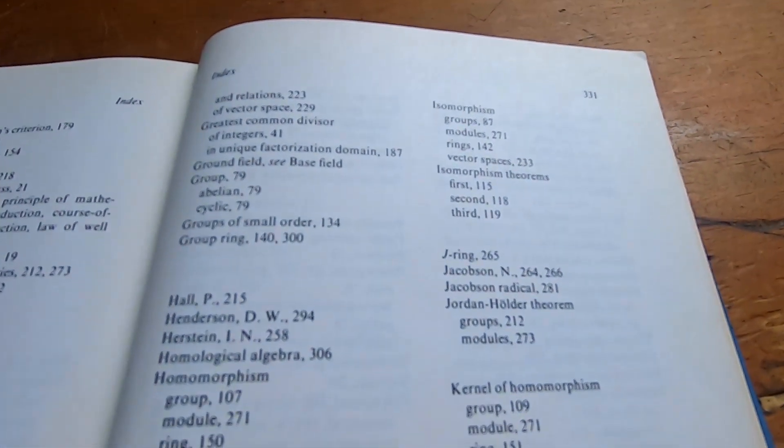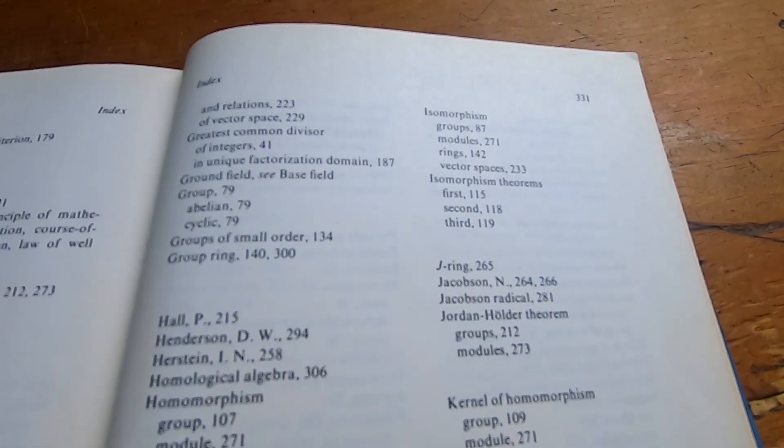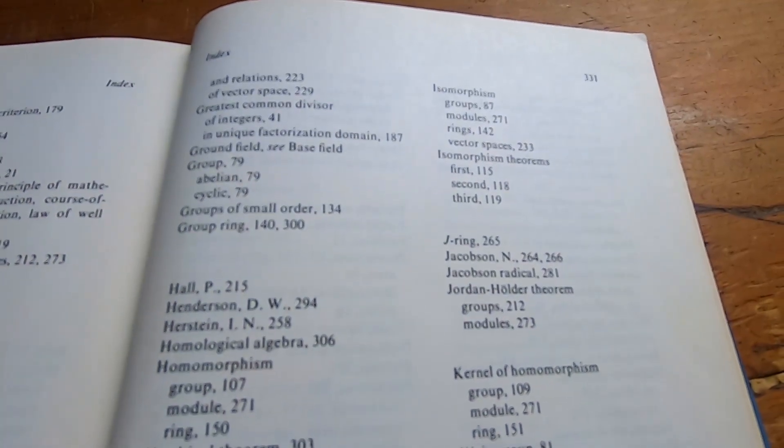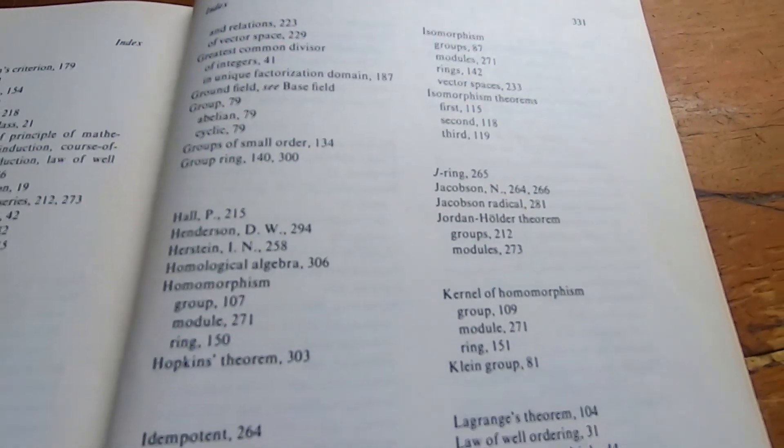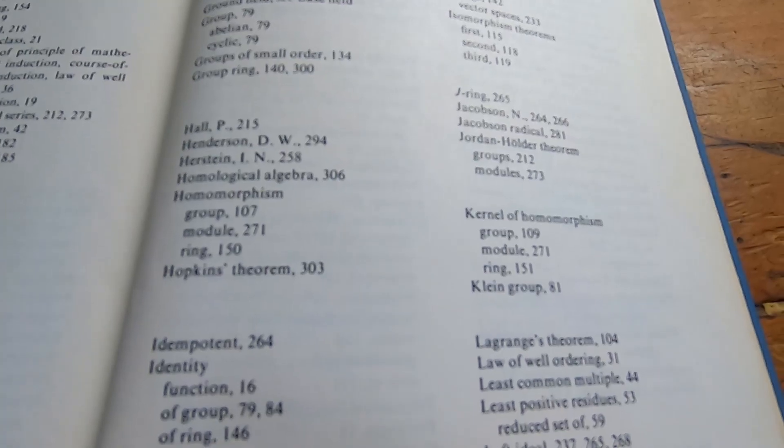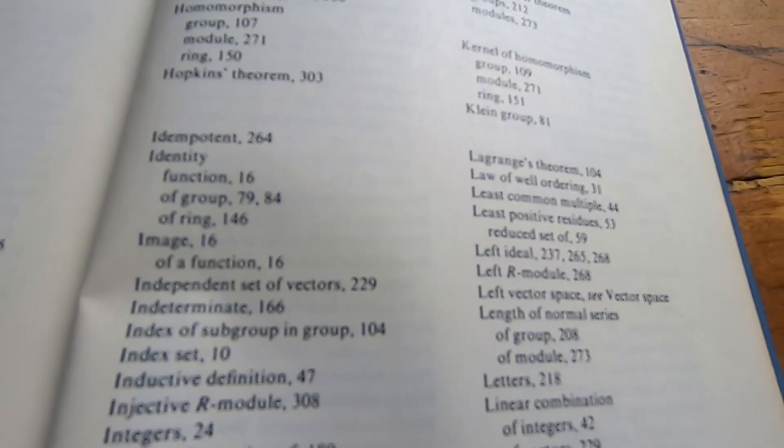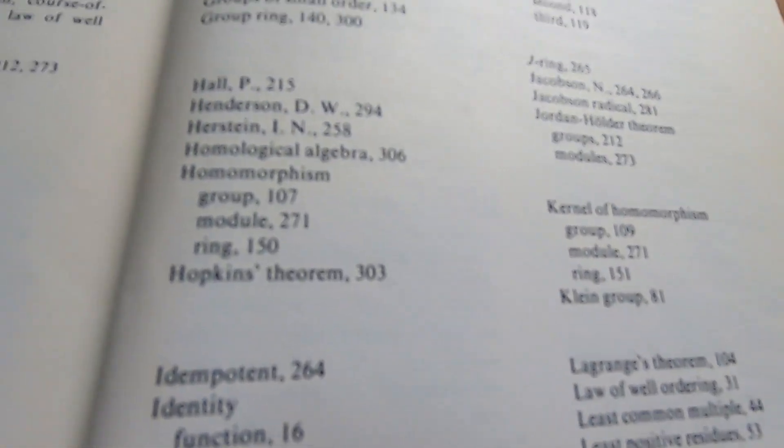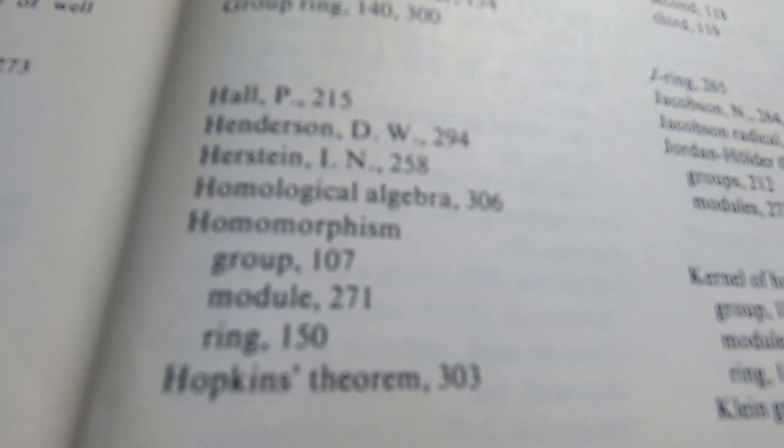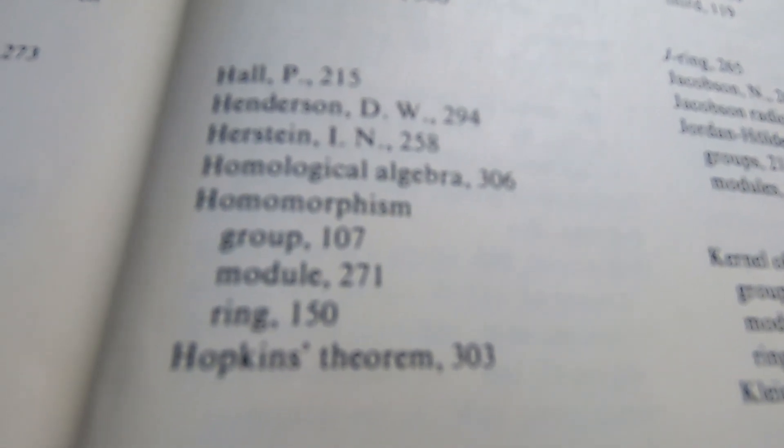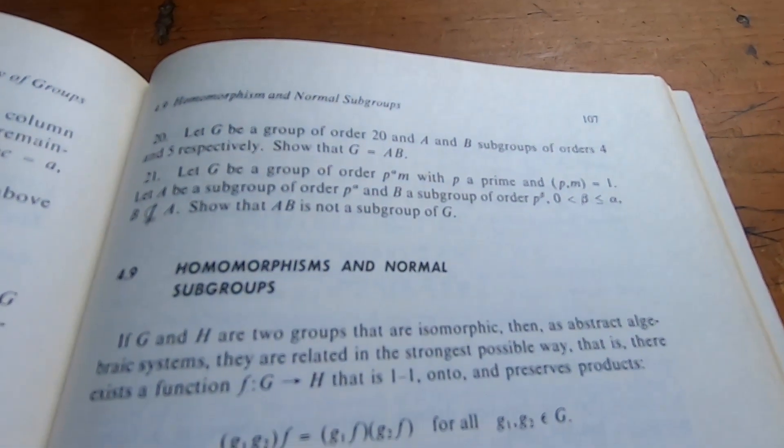The index in the book is also quite useful. So, let's say you're doing some homework on group homomorphisms, and you want some more examples, or you want to see some proofs of similar things. So, you can get some strategies under your belt. You can look up stuff in the index. So, homomorphism group 107, let's go look at that. So, here it takes you right there.